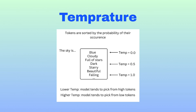So let's start with the first one: temperature. It's not room temperature — LLM temperature is about how tokens are sorted by probability of their occurrence. Temperature is a parameter that controls how much randomness is introduced into the output. This is very important — randomness.